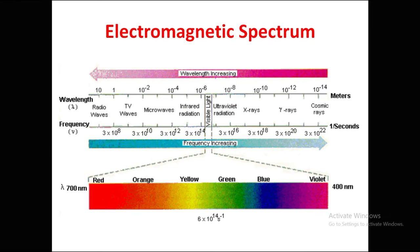Visible light ranges from 700 to 400 nanometers. Ultraviolet radiation follows, ranging from 400 nanometers down to 10⁻⁸ meters in wavelength, with frequencies up to 3×10¹⁶ Hz. X-rays have wavelengths around 10⁻⁸ to 10⁻¹⁰ meters and frequencies around 3×10¹⁸ Hz. Gamma rays span 10⁻¹⁰ to 10⁻¹² meters, and cosmic rays span 10⁻¹² to 10⁻¹⁴ meters with frequencies from 3×10²⁰ to 3×10²² Hz.